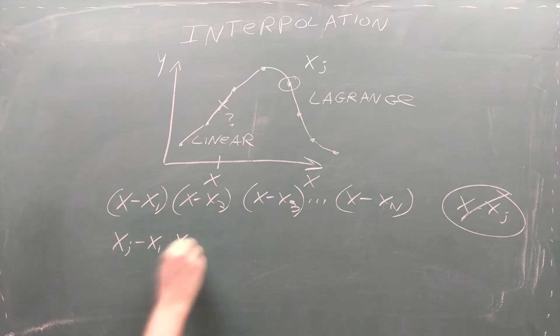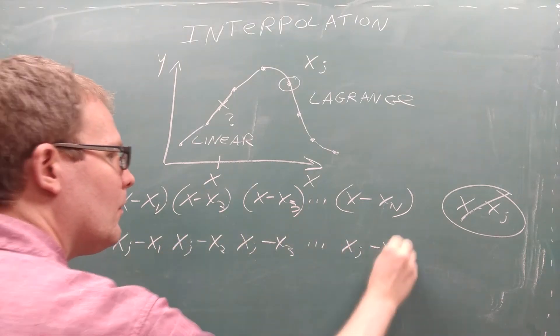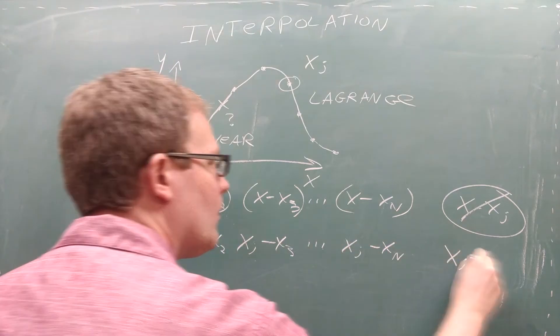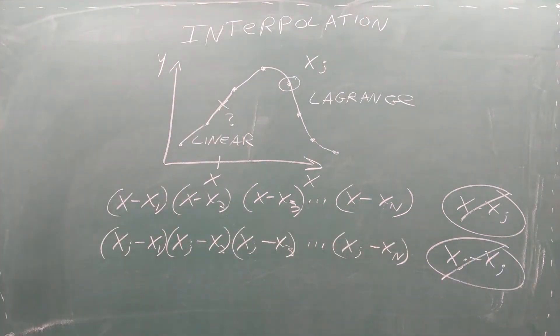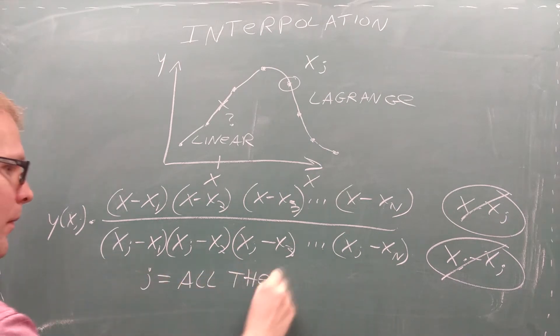Next we do the same thing with xj. We subtract from it every data point except xj and multiply these pieces together. Then we divide the first cluster of factors by the second cluster of factors. Lastly we multiply this long fraction by the value of the dependent variable at xj.